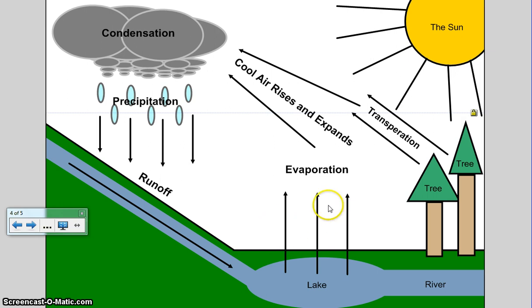Another way for cool air to rise and expand is from transpiration. Transpiration is the process of plants and trees having water vapor evaporating out and cooling and rising again.